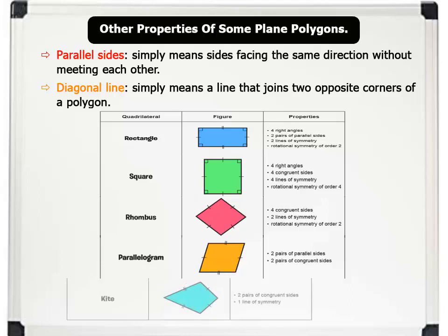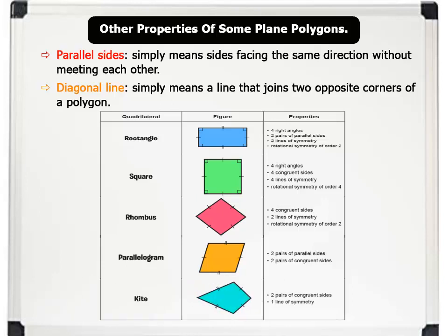And for a kite, two pairs of adjacent sides are equal, and the shorter diagonal divides the kite into two unequal isosceles triangles. Note that congruent simply means equal sides.